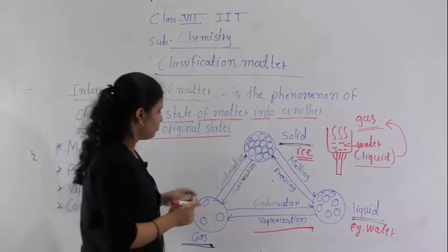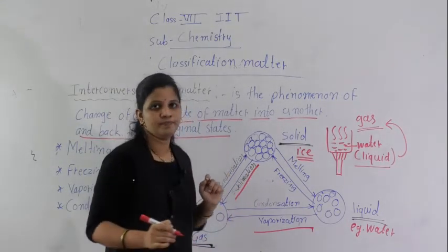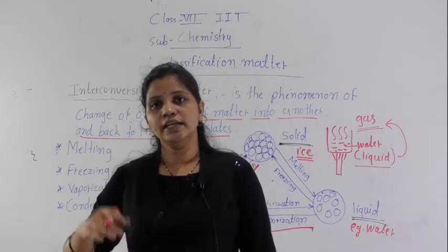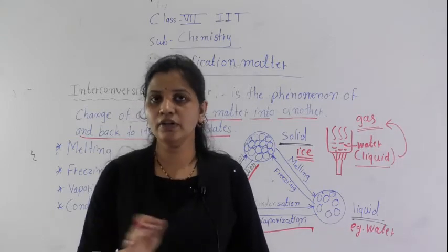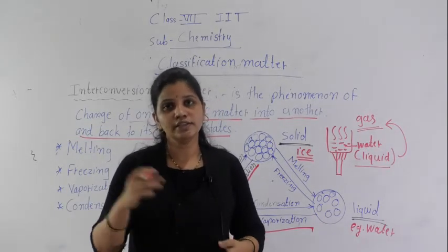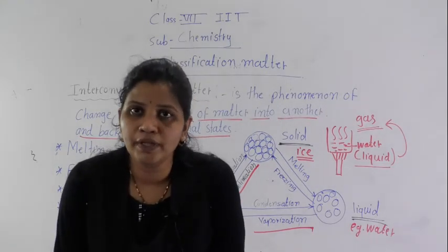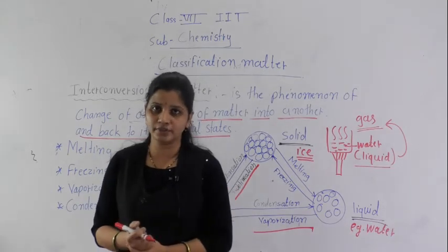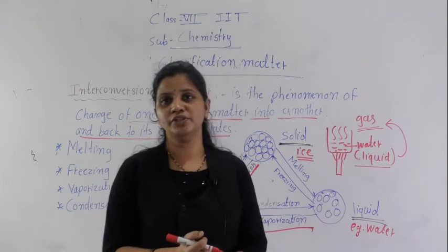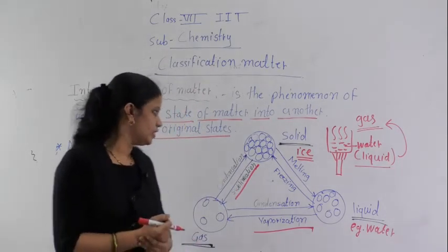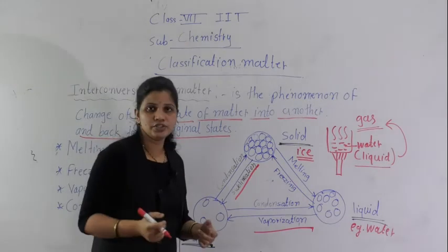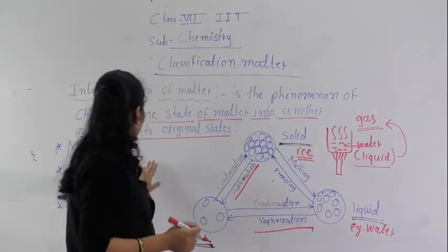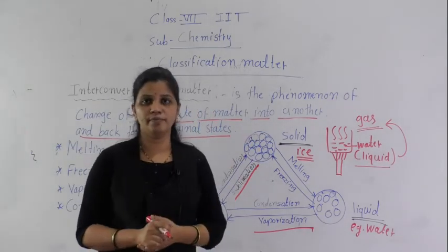Now there is one more process — sublimation. Sublimation means a solid substance is directly converted into a gaseous state without converting into a liquid state. Substances that undergo this process are known as sublimable substances. For example, camphor is directly converted into gaseous state — that is one example of a sublimable substance. So these are the interconversion of states of matter.